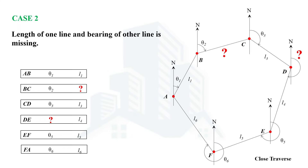Let's say we are having a closed traverse of six lines. This closed traverse starts at point A and also comes back to point A. In this closed traverse, the length of BC is missing and the bearing of DE line is missing. The length is not known and the bearing of DE line is unknown. So how can we determine the length of one line and bearing of another line in any closed traverse?